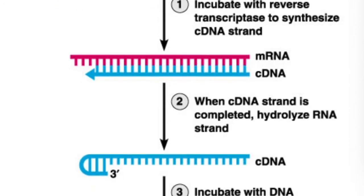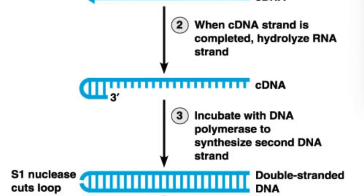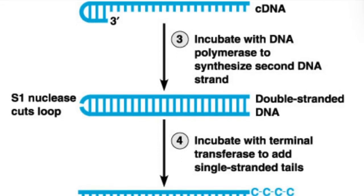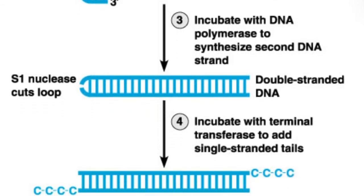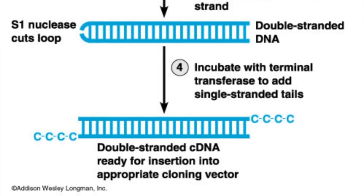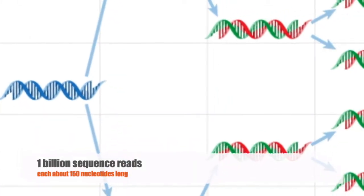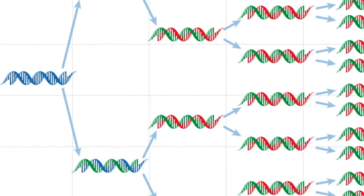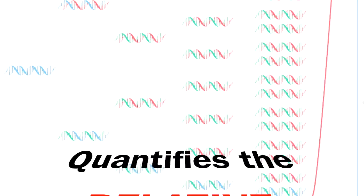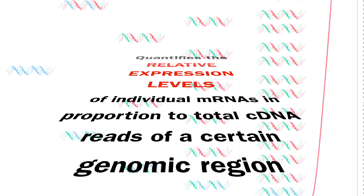Reverse transcriptase will build a complementary strand to the now isolated mRNA molecules, converting it into a more stable, double-stranded molecule that can withstand being sequenced — which would then be called complementary DNA, or cDNA for short. This process is known as reverse transcription, and is usually followed by PCR, or polymerase chain reaction, in order to amplify the signal, which is why RNA-seq is considered to be indicative of relative expression levels.